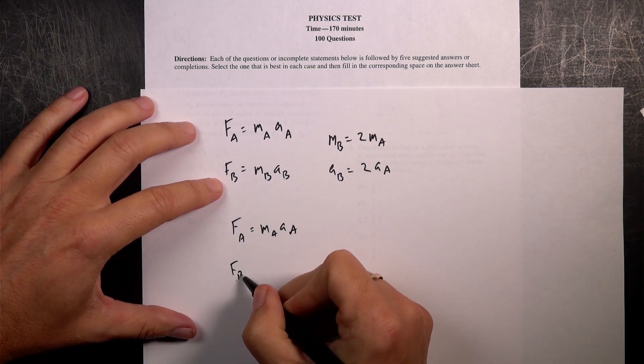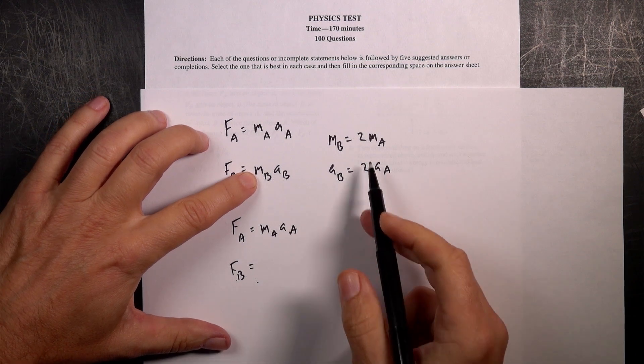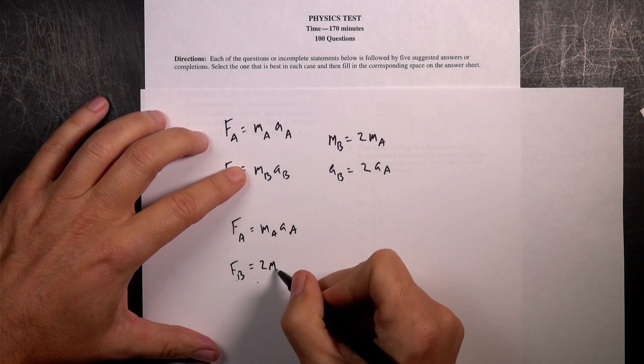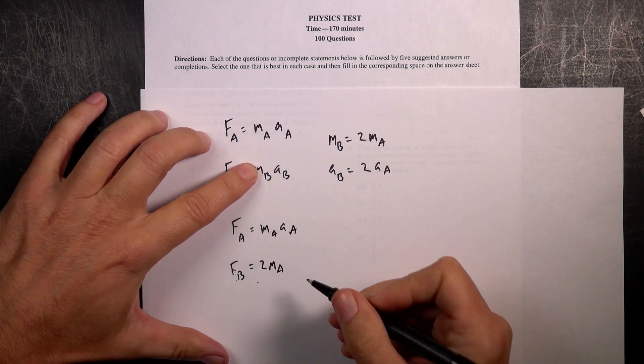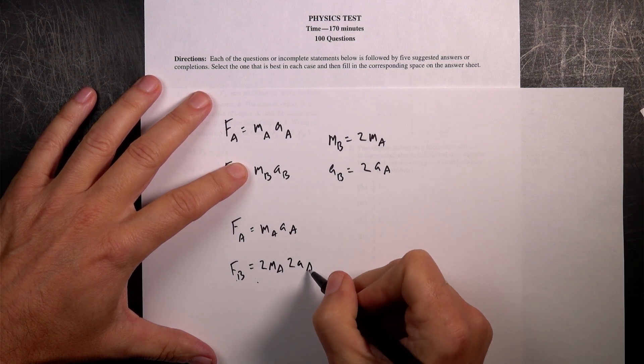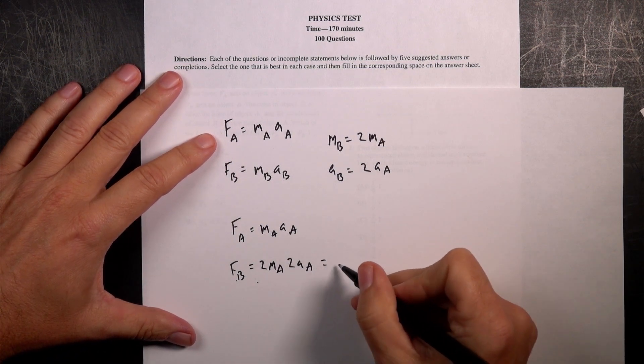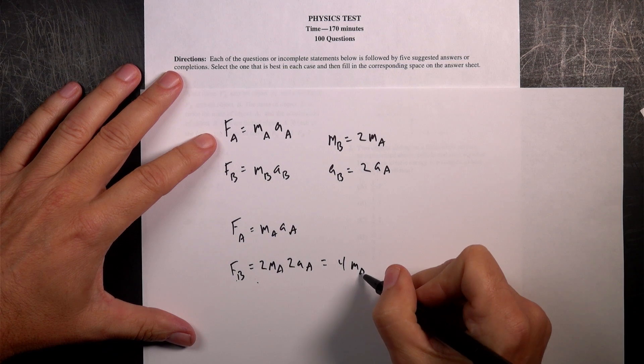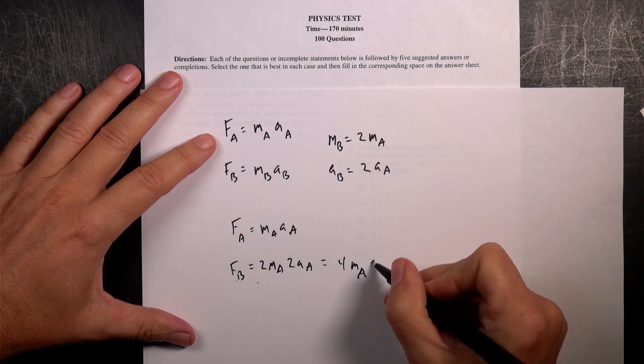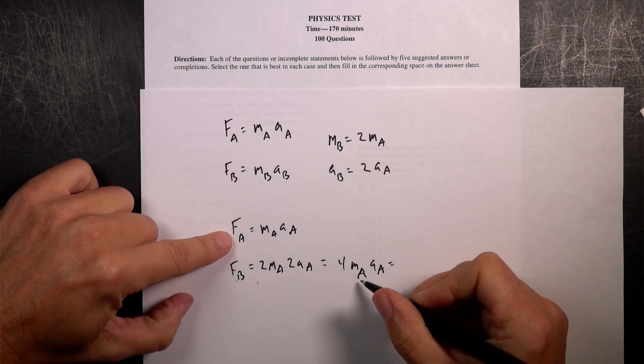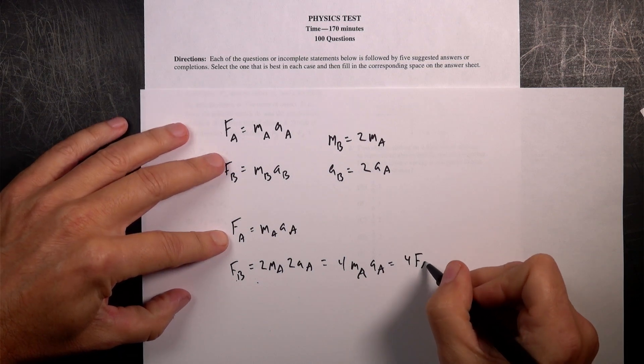For FB, I'm going to write that as FB equals MB, but I'm going to put in 2MA. And AB I'm going to put in as 2AA because those are equal. So this is going to be equal to 4 MA AA, which that MA AA is FA. So this is 4FA.